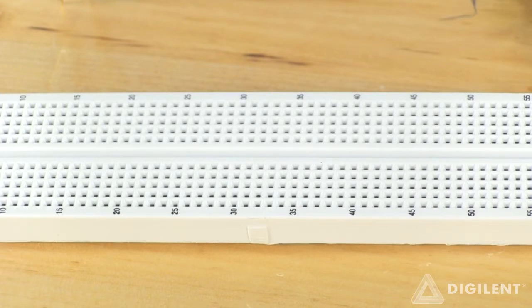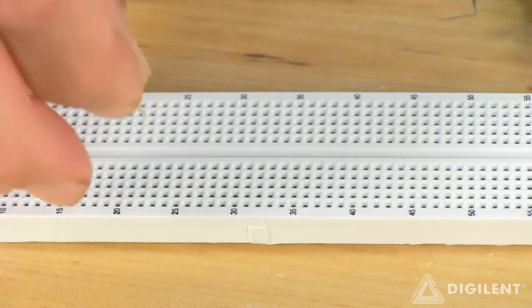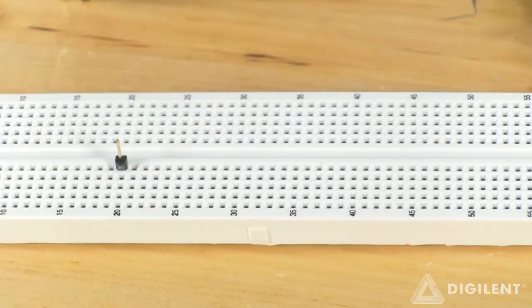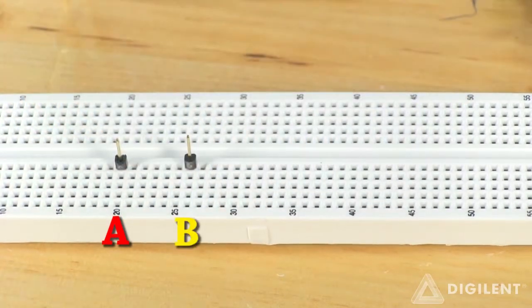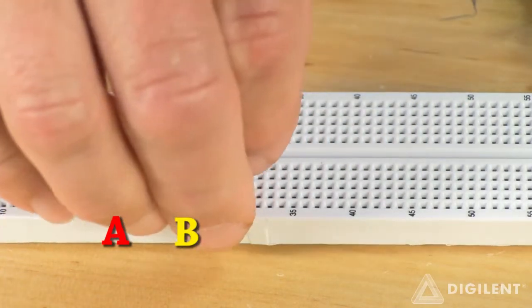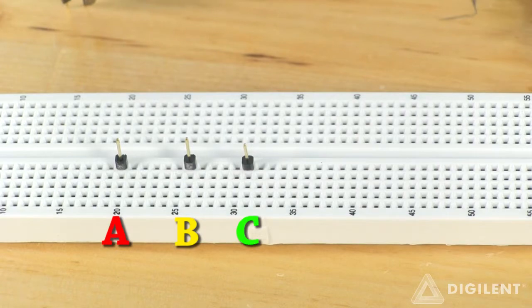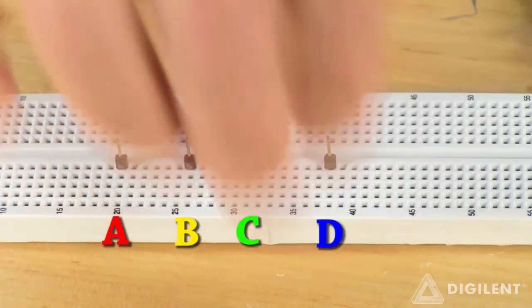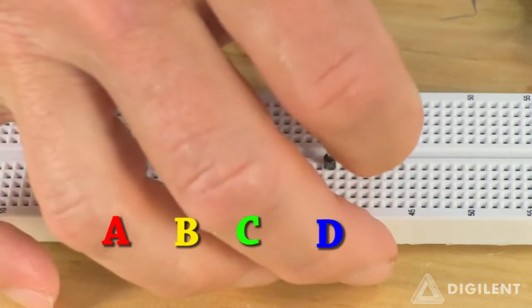First, let's choose rows to correspond to our five nodes. I'll insert these connectors in the rows I choose to keep my place and make it easier for me to find my nodes later. This will be node A, node B, node C, node D, and node E.